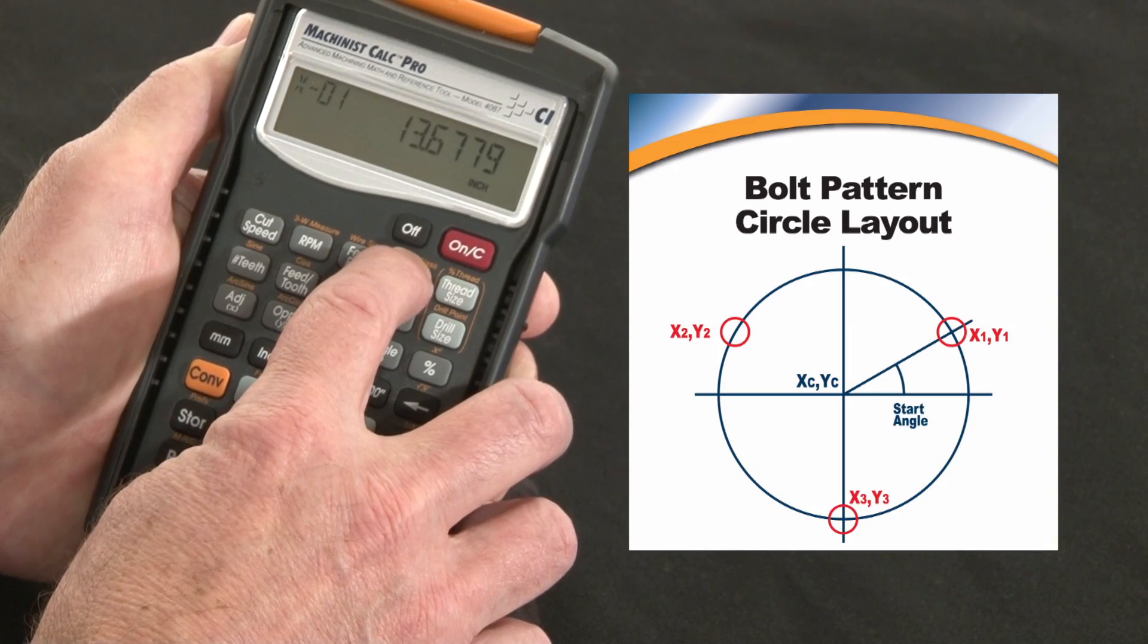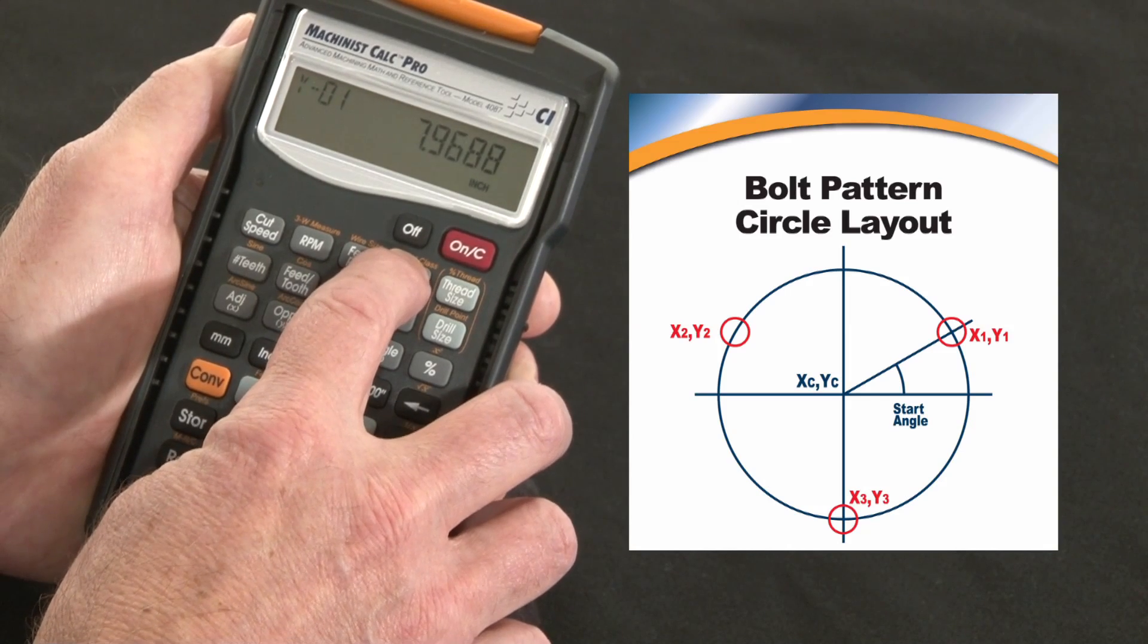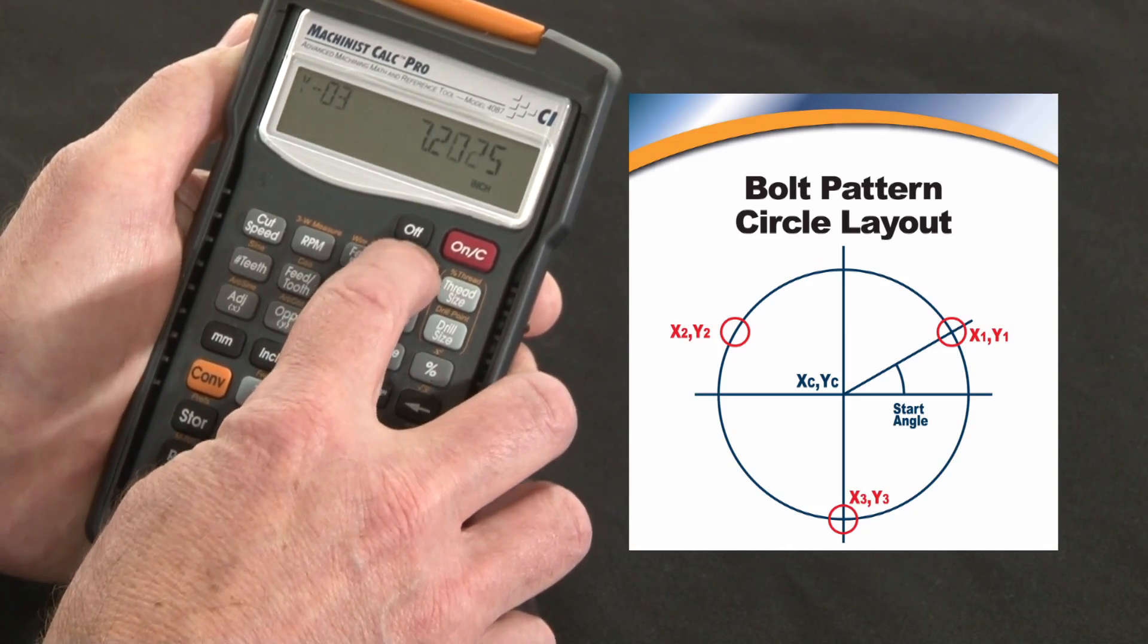But now look at that X1 location, 13.67 and the Y, and I can go all the way through all 5 locations.